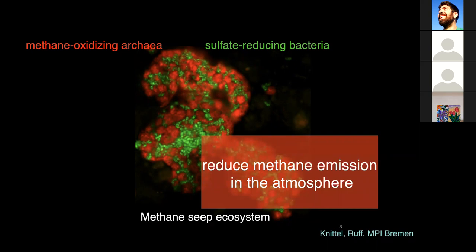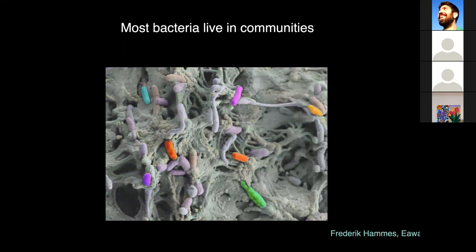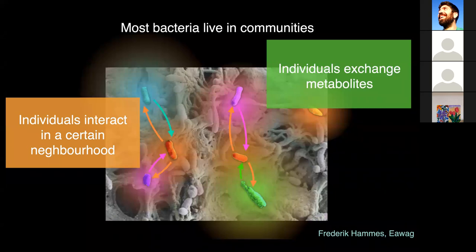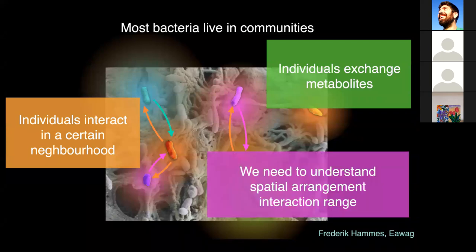Bacteria in these communities secrete compounds and take up compounds such as sugars or amino acids. In this way, individuals exchange metabolites. This metabolic exchange is done between cells that are within a certain spatial distance, so typically individuals interact within a certain neighborhood. This creates a network of interactions between species. If we know the spatial arrangement of the different species and the range at which they interact, we are able to reconstruct the spatial network of interactions that occur inside the community.